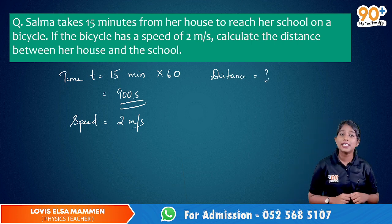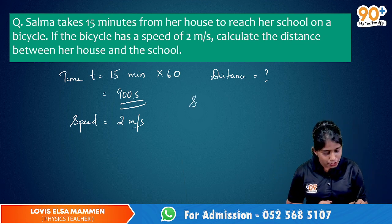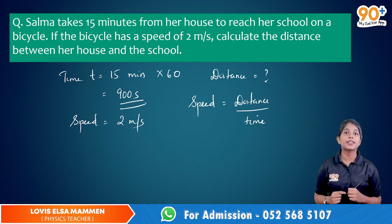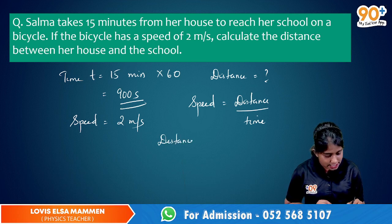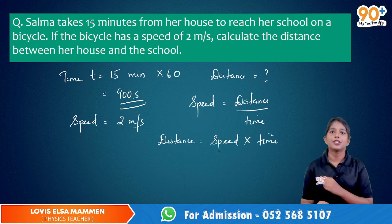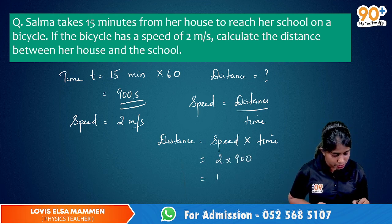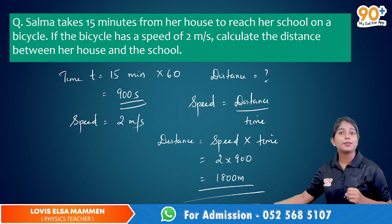How will you find distance if speed and time are given? We know the basic equation: speed is equal to distance divided by time. Here speed and time are given, and we need to find distance. So we can rewrite this as distance is equal to speed multiplied by time. Just substitute: 2 into 900, which gives 1800 meters. So we have got the value of distance, which is 1800 meters.